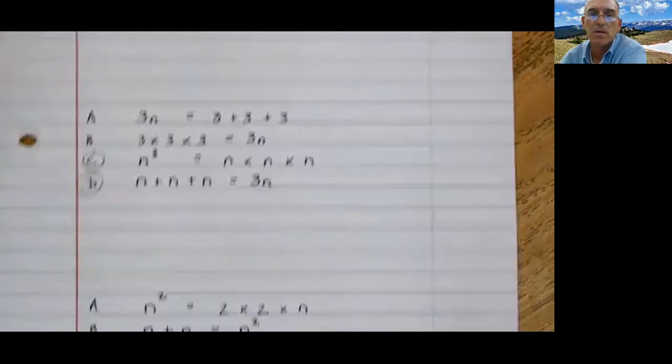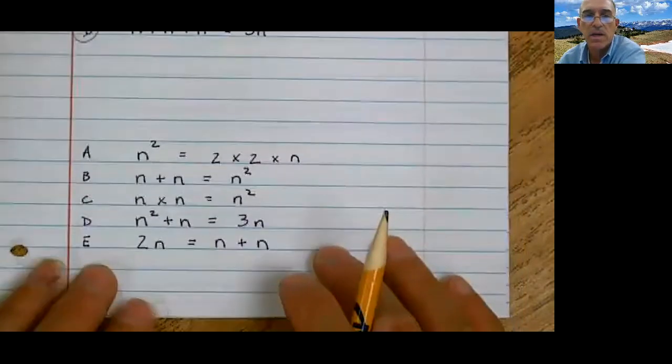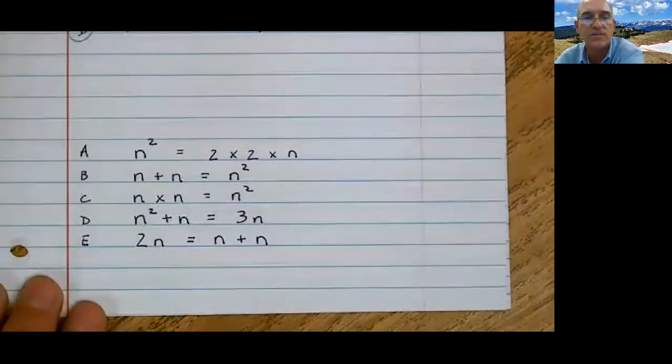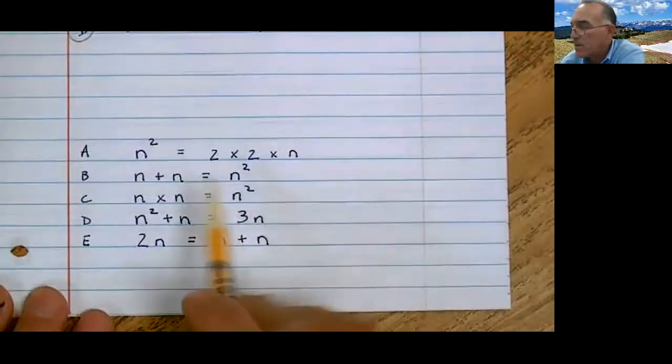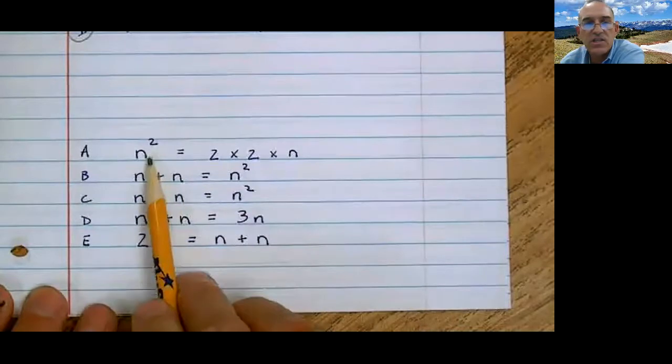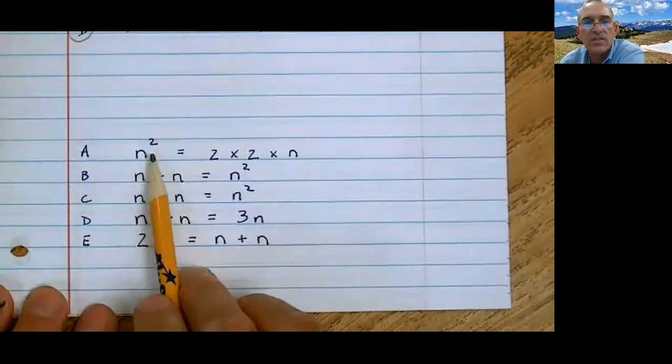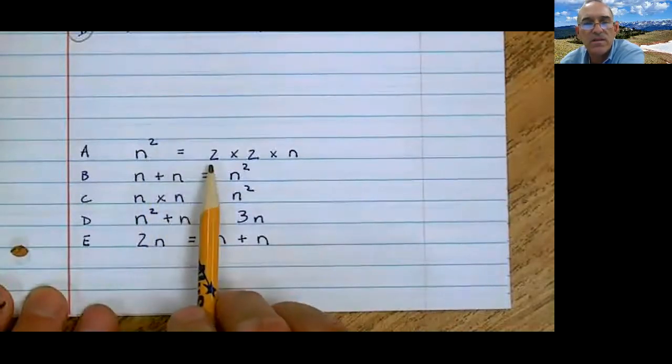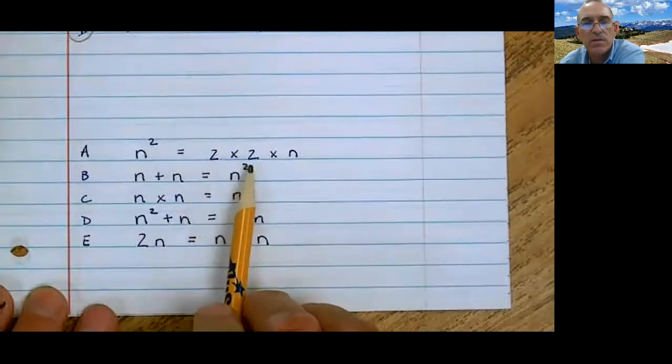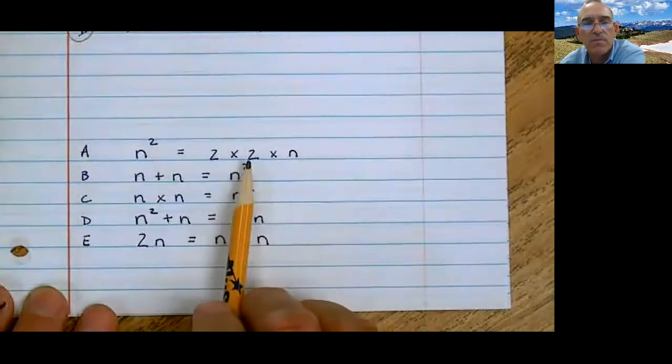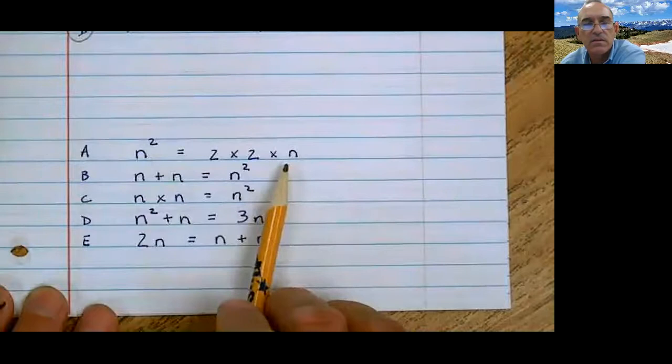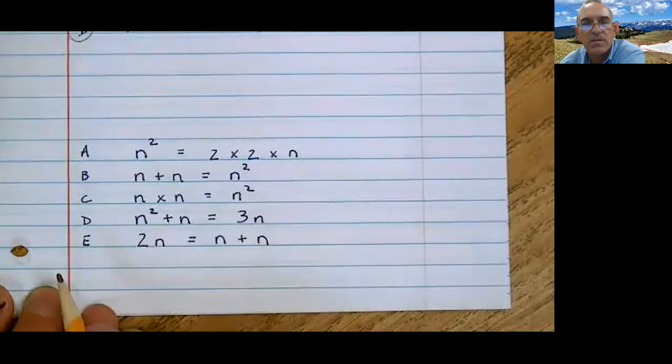Pay attention, one more, last one. Again, this one has five choices. Oh boy, let's take a look. n to the second power, or n squared - does that equal 2 times 2 times n? No, because 2 times 2 is 4, times that is 4n. So it doesn't equal that.